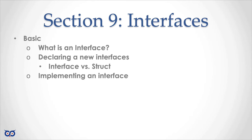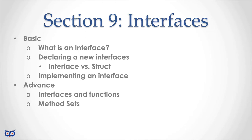Then we're going to look at implementing an interface. A slightly more advanced topic: we'll look at using interfaces with functions. Towards the end, in the advanced part, we're going to try to understand what is a method set. This is going to be important for us to determine when we should use T versus *T. T here represents a type — any type we can create — and *T represents a pointer to that type. T is a type, and *T is also a type.